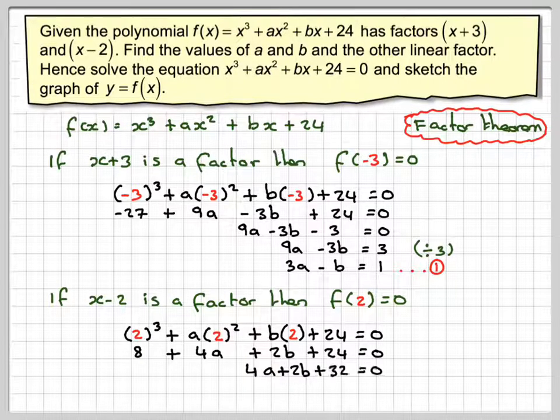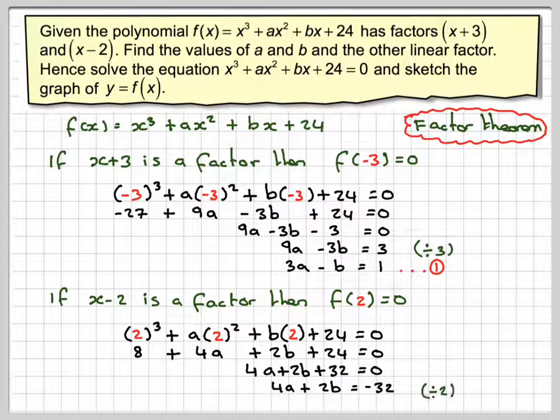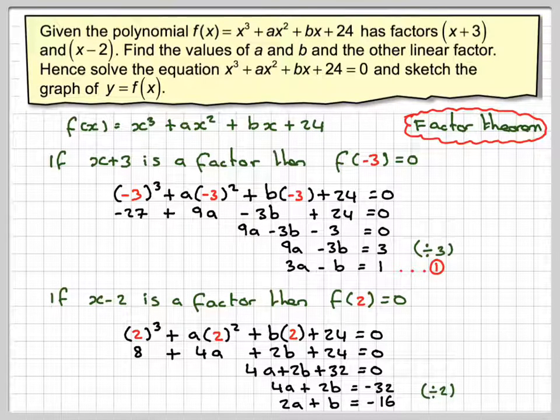So we've got 4a + 2b. 8 + 24 is 32 equals 0. 4a + 2b = -32. Divide through by 2, we get 2a + b = -16. We'll call that equation 2.